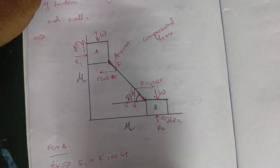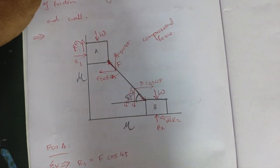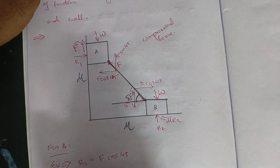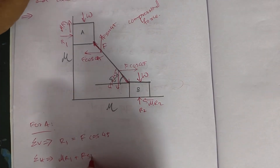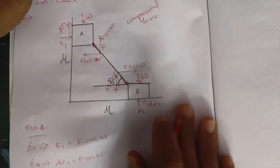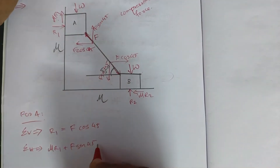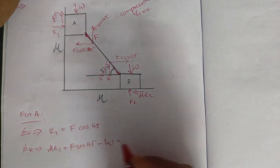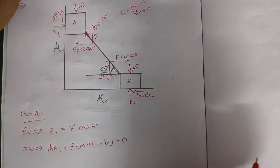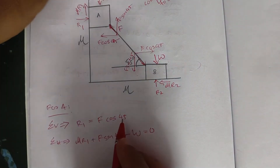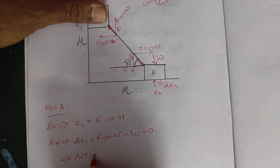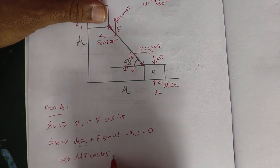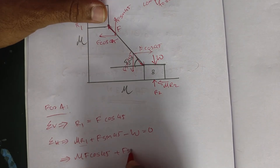For block A, applying vertical equilibrium: R1 plus F sin 45 equals W, and horizontal equilibrium gives mu R1 equals F cos 45. This simplifies to: mu into F cos 45 plus F sin 45 equals W.